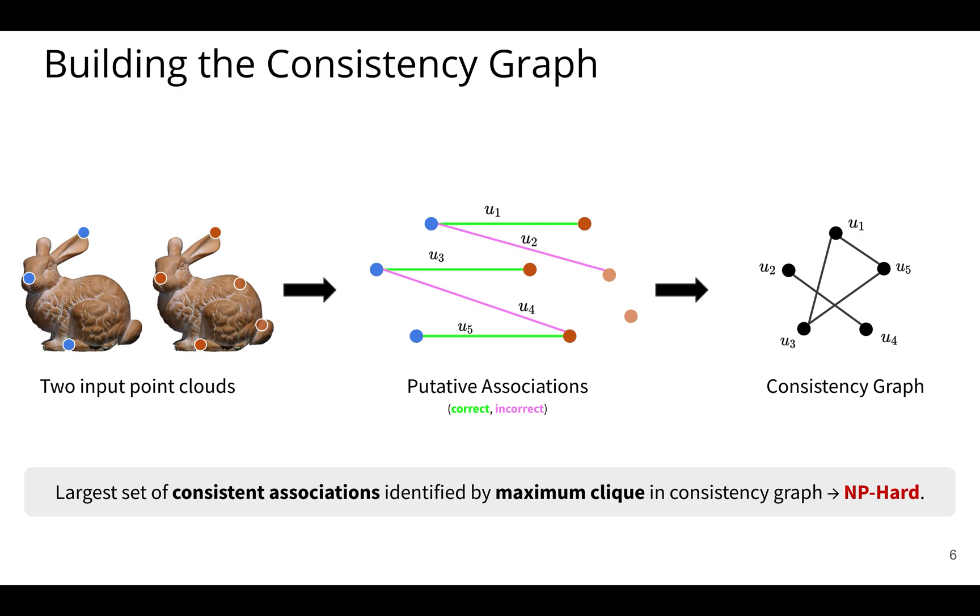We can find the maximum clique in the graph. So the maximum clique problem is well known, well understood, and it's an NP-hard problem. And we'll leverage these ideas of maximum clique here to find this large set of self consistent associations.